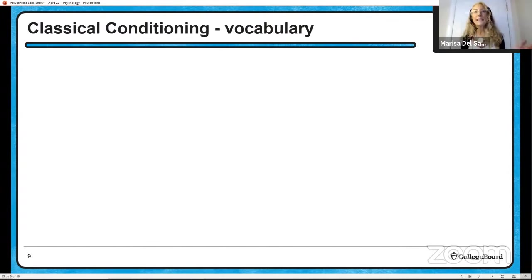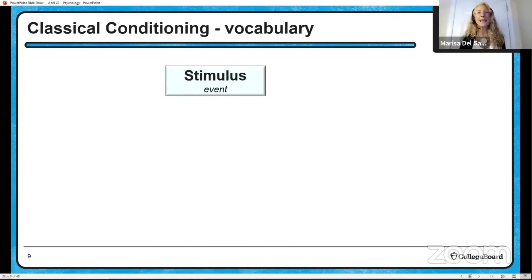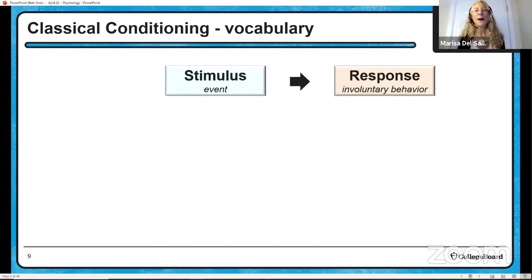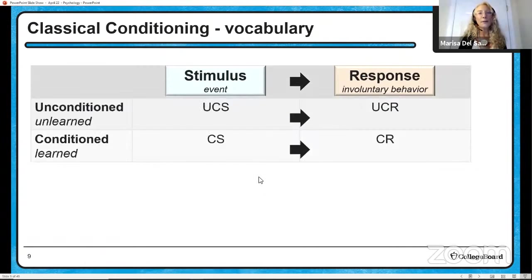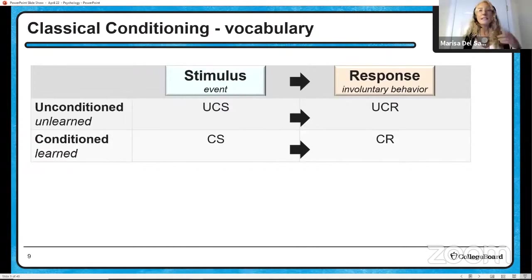We're starting right in classical conditioning. In classical conditioning we are talking about stimulus and response — a stimulus is some external event, and our response is some involuntary behavior. In terms of vocabulary, we have conditioned and unconditioned. Conditioned is learned; unconditioned is unlearned — this is innate, instinctual behavior. Sometimes you'll see them referred to as UCS (unconditioned stimulus) or UCR (unconditioned response).